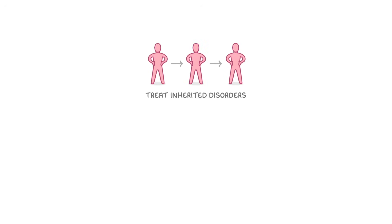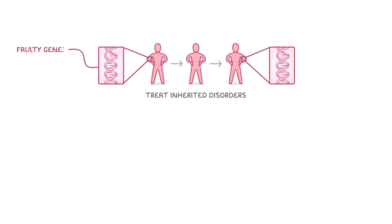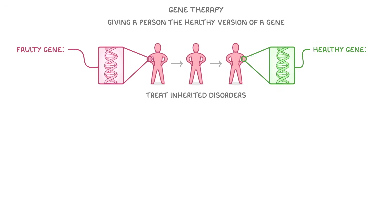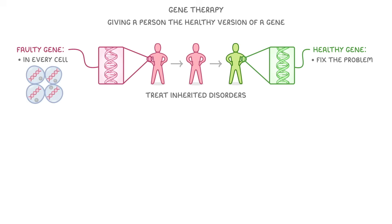Scientists are now researching how we could use this idea to treat some inherited disorders that are due to faulty genes. The idea, known as gene therapy, works by giving a person the healthy version of the gene, in the hope that it will fix the problem. But it's proving pretty difficult to actually get it to work. One of the problems is that the faulty gene would be in all of the person's cells, so we'd have to transfer the new gene into every cell in the body, which is really difficult.